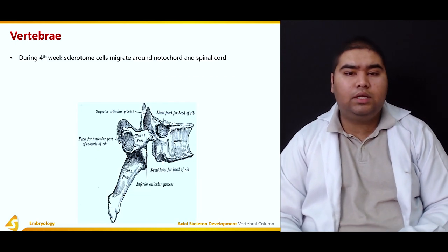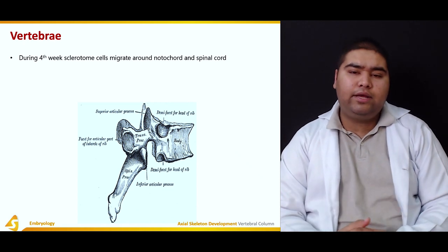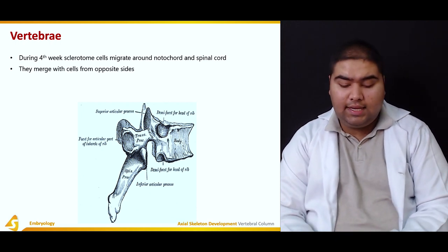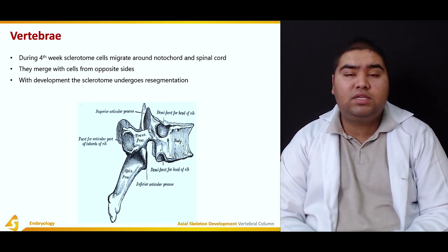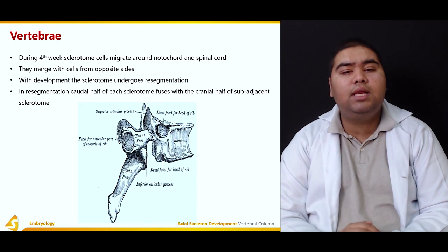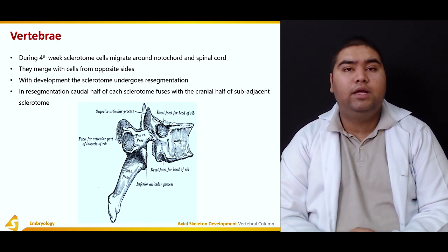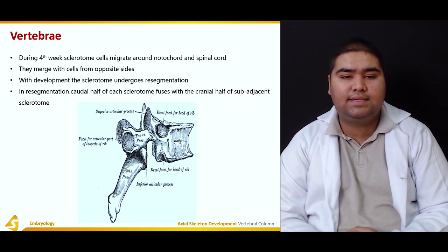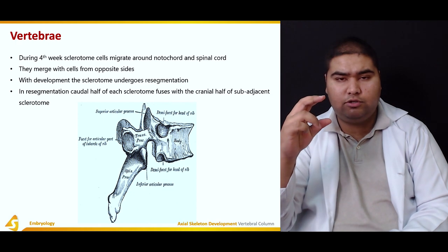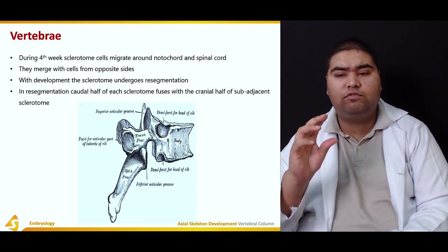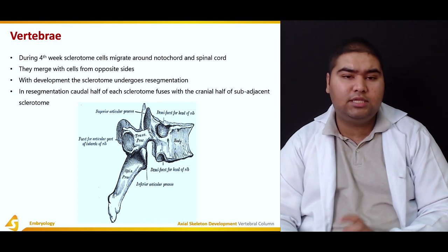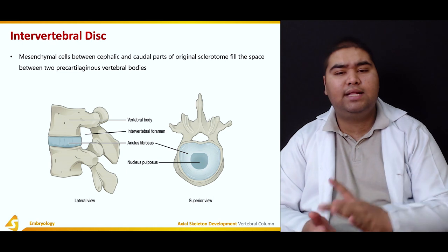During the fourth week, the sclerotomal cells migrate around the notochord and the spinal cord, and they merge with cells from the opposite sides. With development, the sclerotome undergoes resegmentation — a very important concept. In resegmentation, the caudal half of each sclerotome fuses with the cranial half of the sub-adjacent sclerotome, so one is above and the other is below.